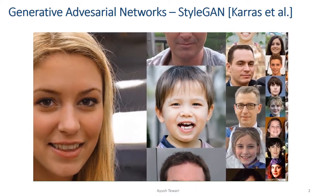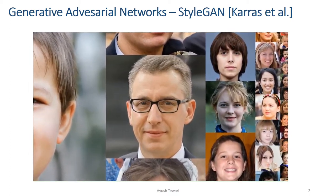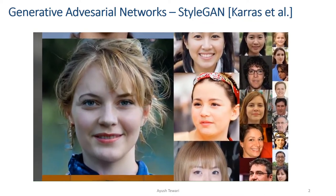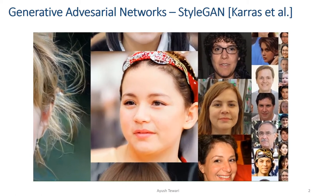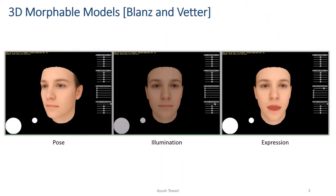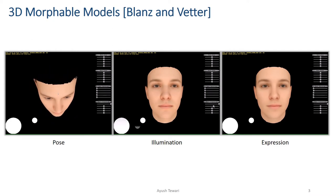Generative adversarial networks such as StyleGAN allow for very high quality and high resolution synthesis of portrait images. However, these models do not allow for 3D semantic control over the output. 3D Morphable models, or 3DMMs on the other hand, model faces as meshes in 3D. This allows for explicit control over the head pose, scene illumination, and facial expressions.